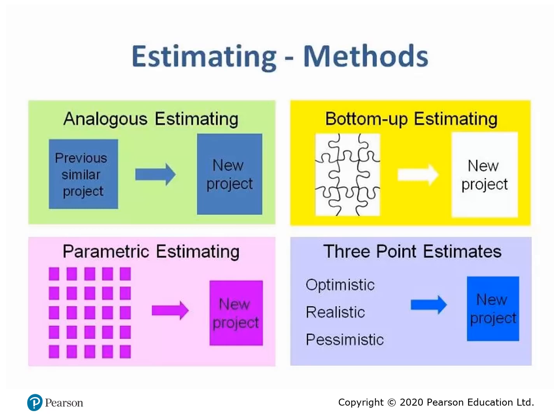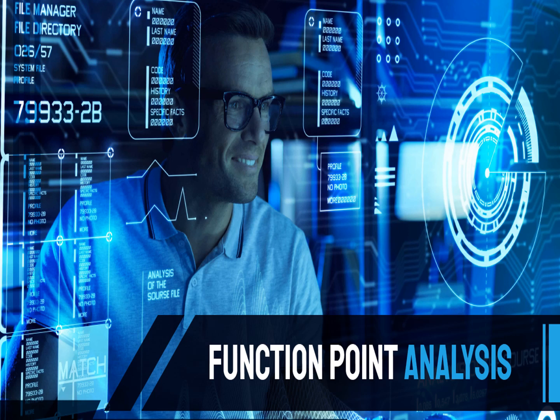This diagram explains in detail that analogies estimating compares with a previous similar project, bottom-up estimation is based on work packages, parametric estimation compares with a similar project, and three-point estimation is based on optimistic, pessimistic, and realistic — meaning most likely — estimates.